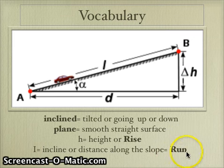The run just means the distance along here, what in this diagram is called the incline or I, it's just the distance along the slope.